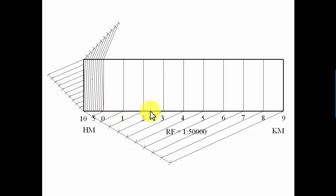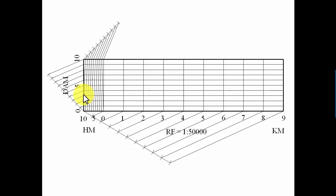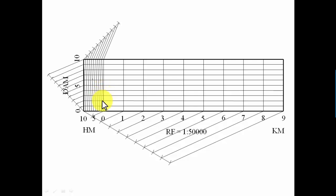Set the drafter horizontally along each division point and draw horizontal lines across. The vertical axis is now labeled: 10 at the top, then 5 in the middle, and 0 at the bottom — representing decameters from 0 to 10. That completes the diagonal scale showing kilometers, hectometers, and decameters.